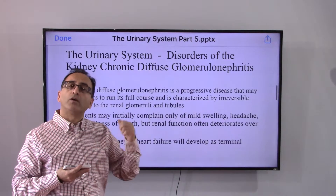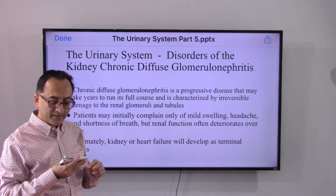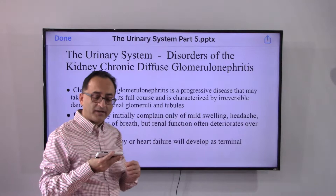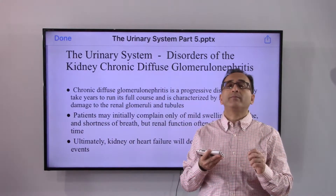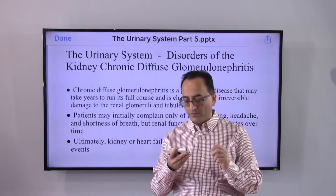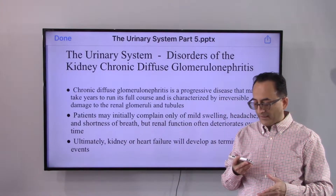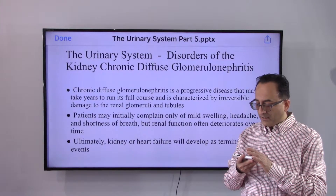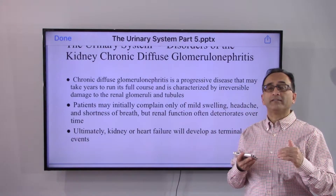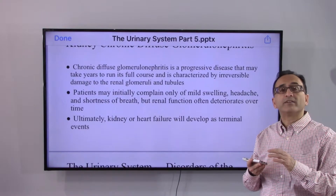Chronic glomerulonephritis is a progressive disease that may take years to run its full course. It is characterized by irreversible damage to the renal glomeruli and tubules. The patient may initially complain of mild swelling, headache, and shortness of breath, but the condition deteriorates over time, ultimately potentially leading to kidney failure or heart failure as terminal events.